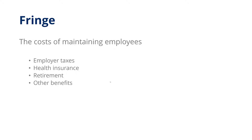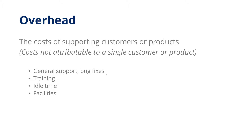In the latter part of the presentation we'll talk about how we actually allocate these costs. Right now we're just talking about cost collection and cost pools. Overhead costs are those costs of supporting customers or products — costs not attributable to a single customer or product. Direct costs are things directly attributable to a single customer or product. Overhead, in contrast, has the feel of cost of goods sold but because you can't assign it to a single customer or product, it becomes part of overhead.